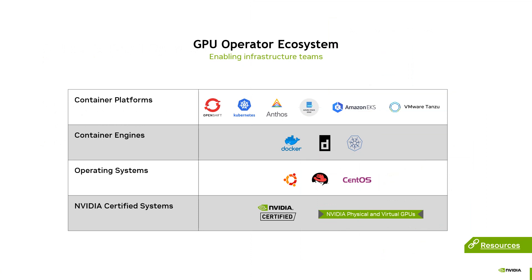Now let's switch our focus to the robust GPU Operator ecosystem. The GPU Operator supports a wide range of operating systems, container engines, and container platforms. The major operating systems include Ubuntu, CentOS, and Red Hat Enterprise Linux CoreOS. For container runtime, we support Docker Engine, containerd, and CRIO. GPU Operator works on upstream Kubernetes distributions and commercial on-prem or cloud offerings including Red Hat OpenShift and VMware vSphere with Tanzu for self-managed distributions, and Google GKE, Amazon EKS, and Azure AKS for fully managed CSP offerings. In addition, it supports physical and NVIDIA virtual GPUs.